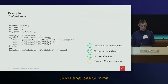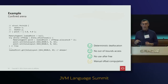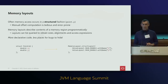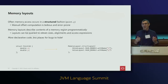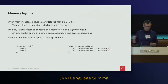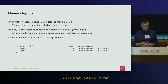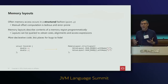Now we have deterministic deallocation, spatial safety, and temporal safety. But we still have to specify offsets manually — for example, if our point2D struct changes, all our offsets break. Our solution is a Memory Layout API to describe the layout of a region of memory. We can create a struct layout object with two fields named X and Y of type Java double. Once we have a layout object, we can query it for the size of the struct or the offset to any field.